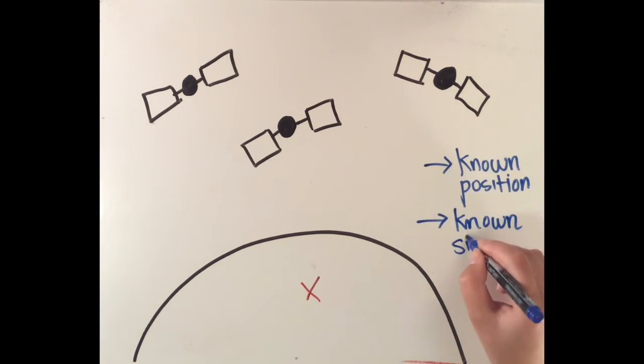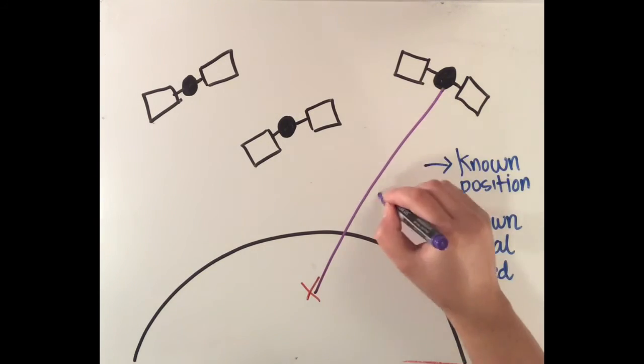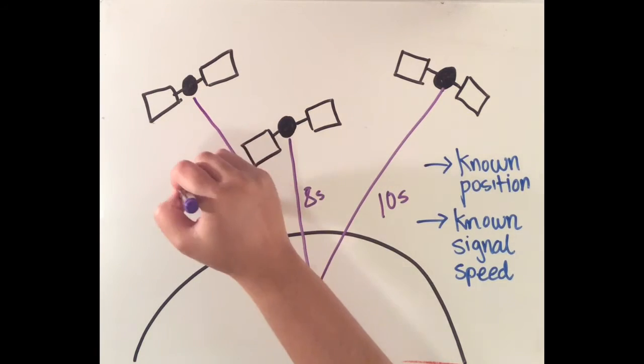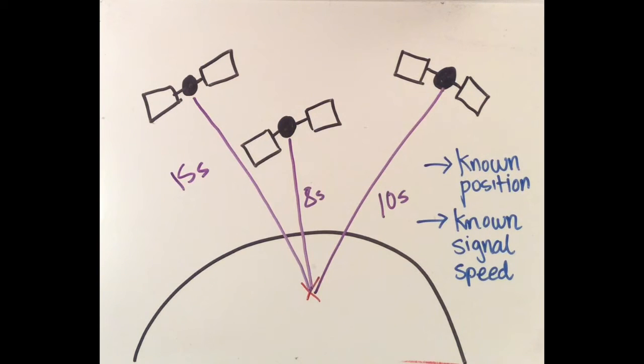Satellites calculate how long signals took to travel from the Earth-bound GPS devices to them using a complex system of synchronized codes. This time information, when combined with other variables, can be used to calculate the distance between the satellites and the receivers on the ground. The devices then combine this distance information from multiple satellites in order to calculate their own latitude and longitude.